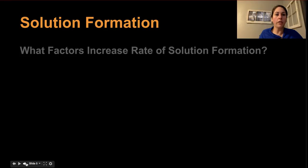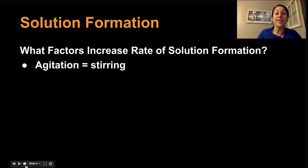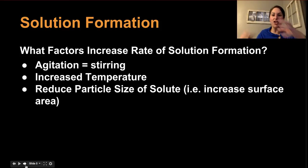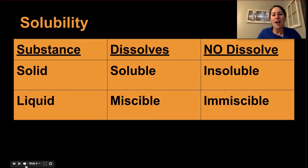With solution formation, there are different rates at which we can form a solution. To increase the rate, you can stir — like making orange juice, stirring helps a lot. Increasing temperature also speeds things up; if you warm that frozen orange juice concentrate it dissolves faster. The other factor is reducing particle size — breaking up big chunks of concentrate into smaller pieces increases the rate of solution forming, so you can drink your orange juice at breakfast instead of lunch.